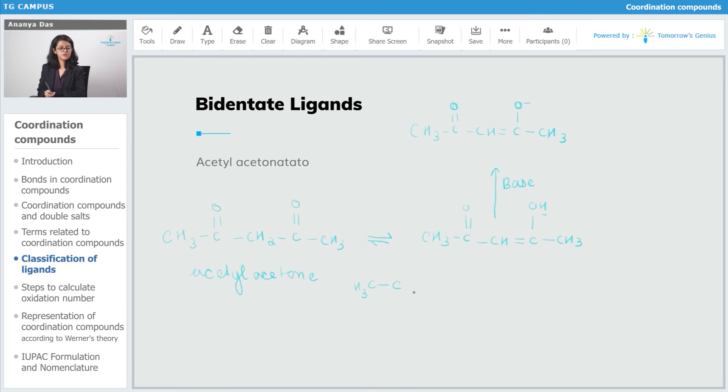Upon binding, it looks like something like this. Acetyl-acetonato in short form is written as ac-ac.